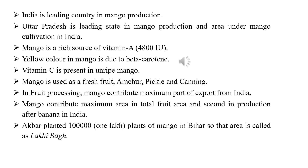Mango contributes the maximum area in total fruit area in India and holds second position in production after banana. The Mughal period is considered the golden era of mango cultivation. During this period, Akbar planted one lakh mango plants in Bihar, so that area is known as 'Lakhi Bagh' — specifically the area of Darbhanga, Bihar.